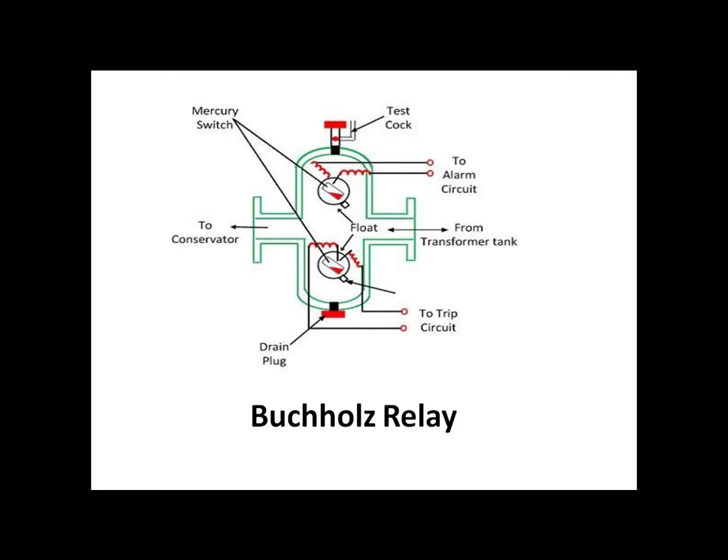This is also another diagram of a Buchholz Relay. As you can see here, there are two mercury switches, one in the lower part and one in the upper part. There is a float connected in the upper and the lower part. The lower arrangement is connected with the trip circuit, and the upper arrangement is connected with the alarm circuit.